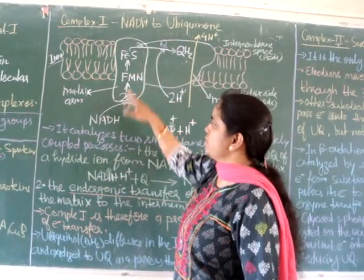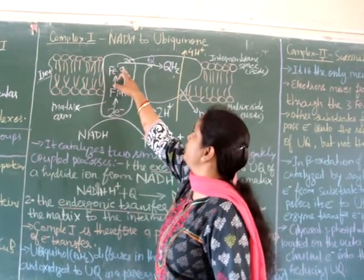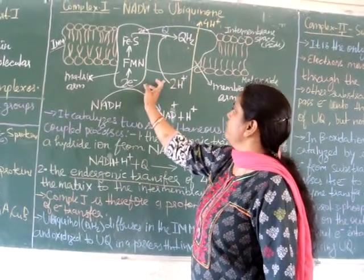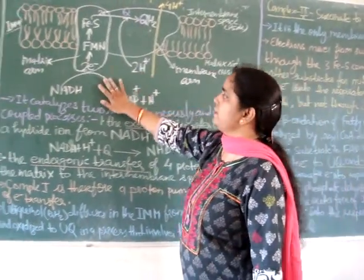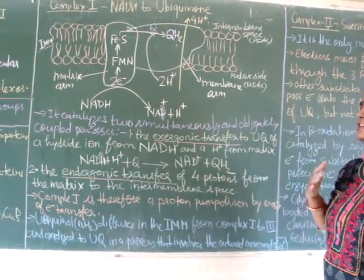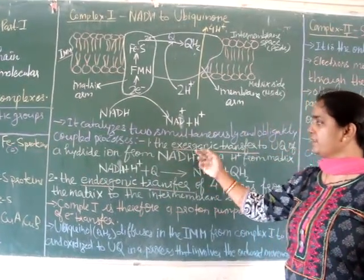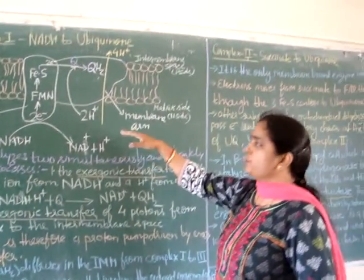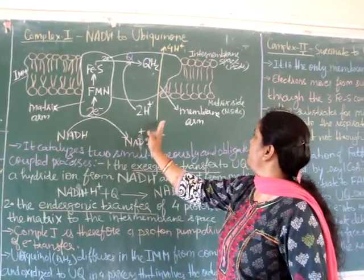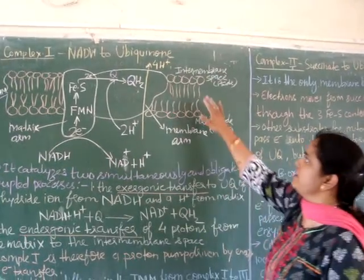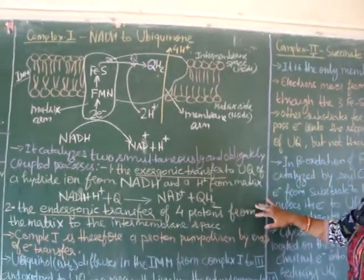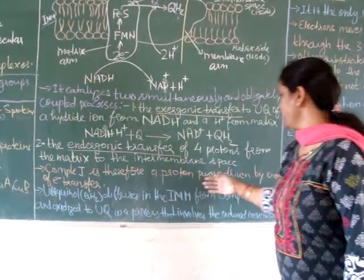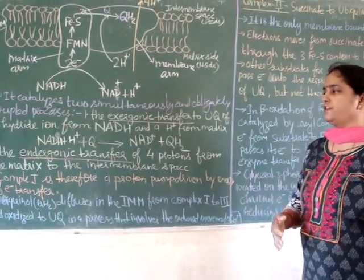The transfer proceeds through prosthetic groups like flavin mononucleotide and iron-sulfur proteins, and lastly to ubiquinone, reducing it to ubiquinol. Protons come from the matrix side. This electron transfer reaction is exergonic and releases free energy. The second coupled reaction is the transfer of four protons from the matrix to the inter-membrane space. During this exergonic process, four protons are pumped from the matrix to the inter-membrane space, making the inter-membrane space more positive. Complex I thus acts as a proton pump driven by the energy of electron transfer.